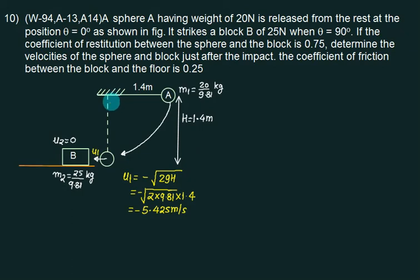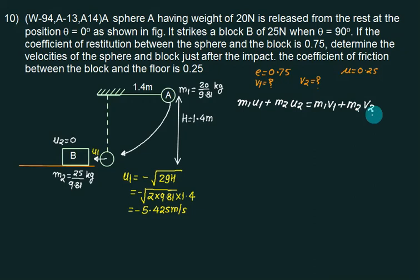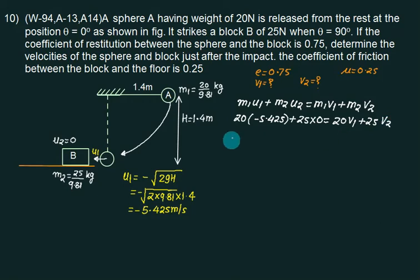The coefficient of restitution is 0.75. We want to find velocity of the sphere and block just after impact: v1 and v2. We apply conservation of momentum — since 9.81 cancels on both sides, we use weights directly. So: 20*u1 + 25*0 = 20*v1 + 25*v2, giving equation one: 20*v1 + 25*v2 = minus 108 approximately.